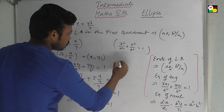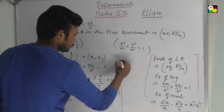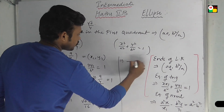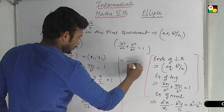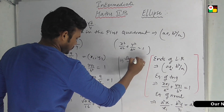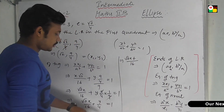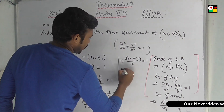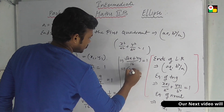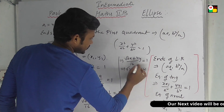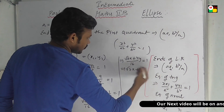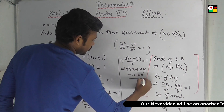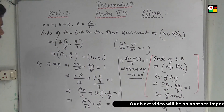So root 7x by 16 plus y by 4 equal to 1. Multiplying through by 16: root 7x plus 4y, then 16 by 16 plus 16, equal to 1 — rearranging gives root 7x plus 4y minus 16 equal to 0. This is the equation of the tangent.